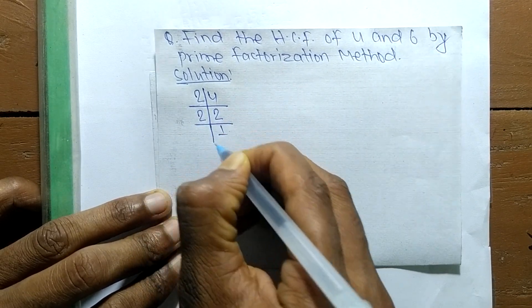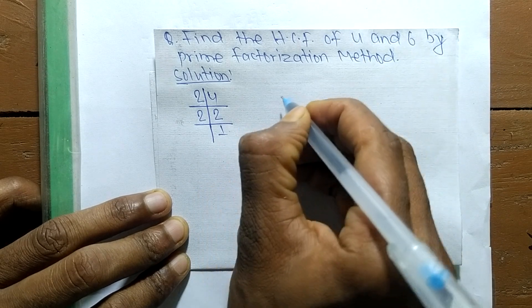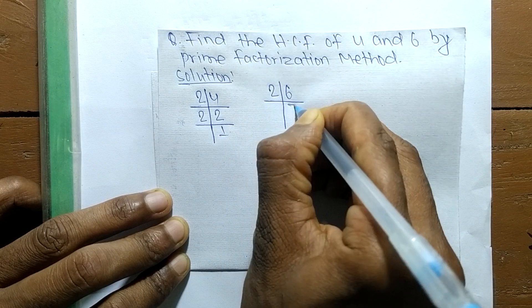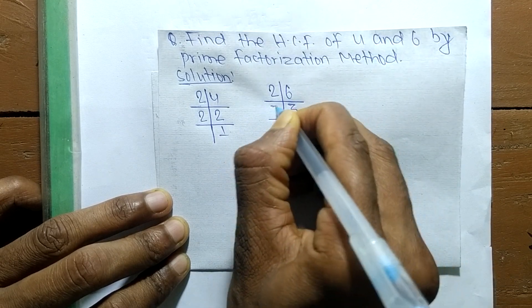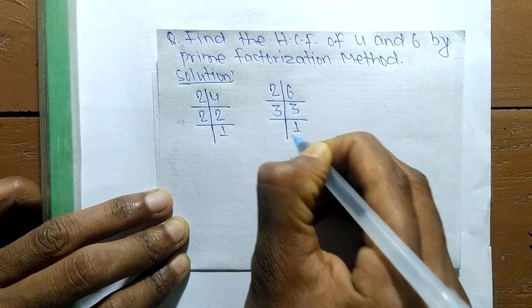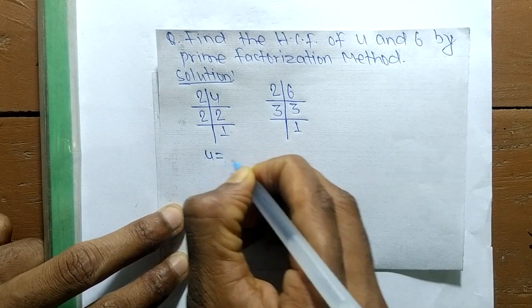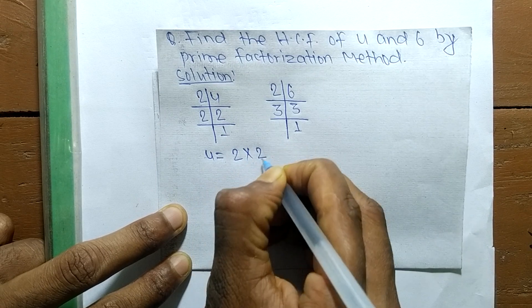The prime factors of 6 are 2 times 3 equals 6, and 3 times 1 equals 3. So from these prime factors we can write 4 is equal to 2 times 2.